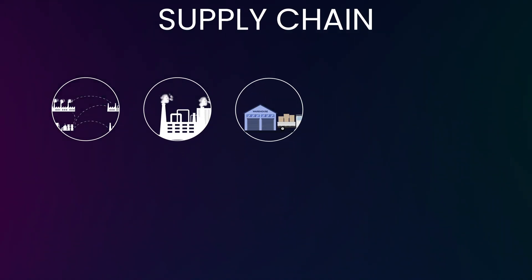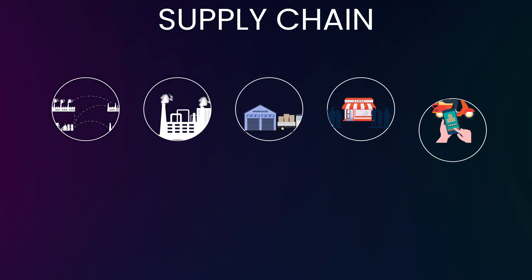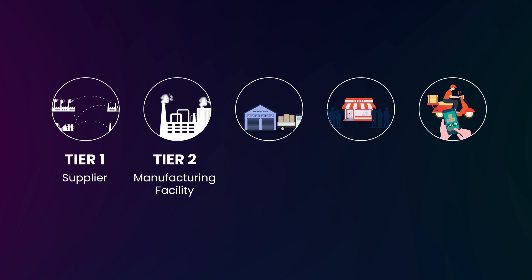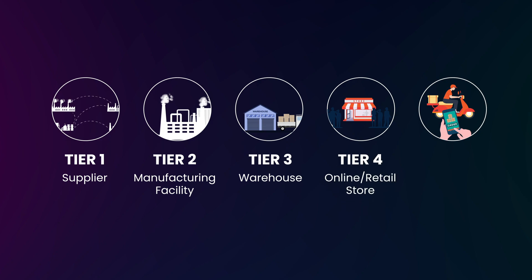Let's look at the classical supply chain architecture consisting of five tiers spanning from supplier at tier 1, where raw materials are sourced, to manufacturing facility at tier 2 where products are manufactured, to warehouse or DC as tier 3 where inventory is stored, to online or retail store as tier 4 where products are purchased, and finally reaching tier 5, the end customer.